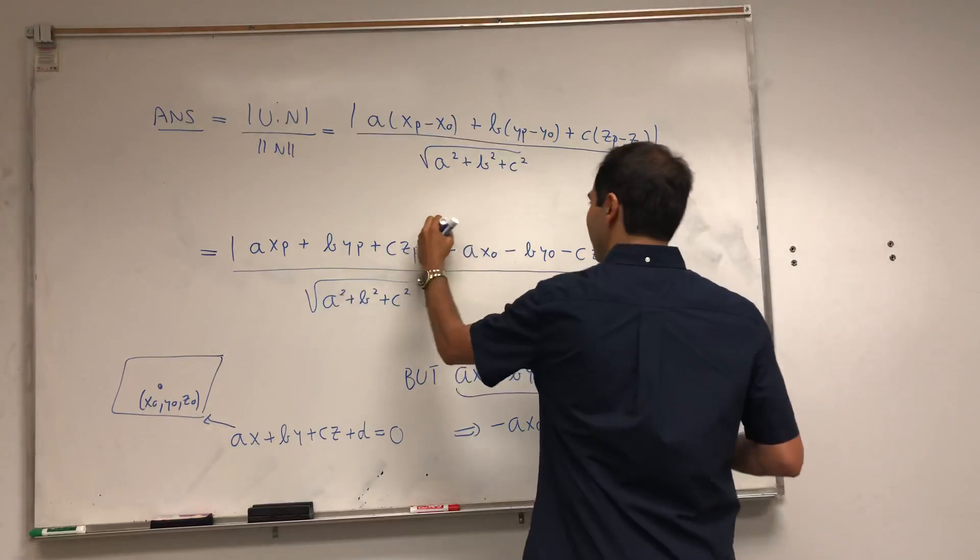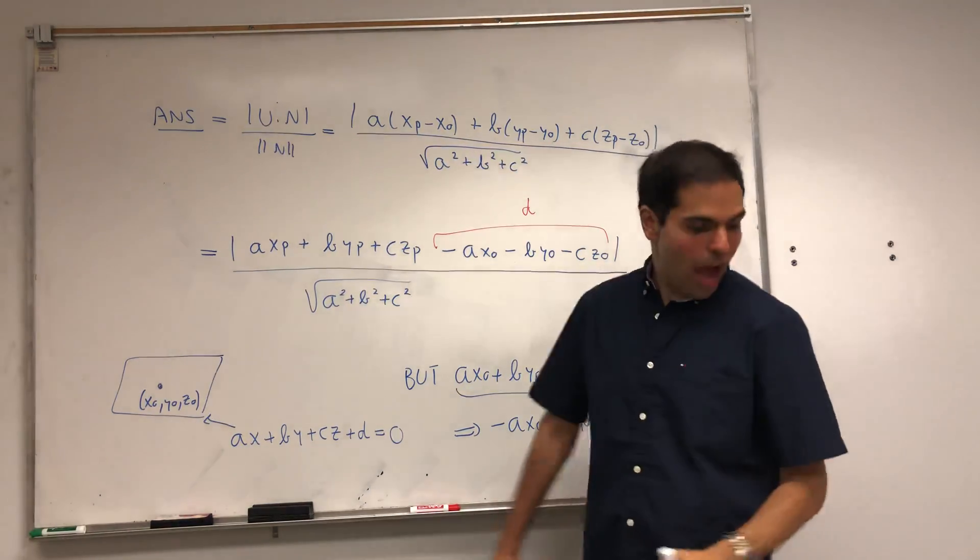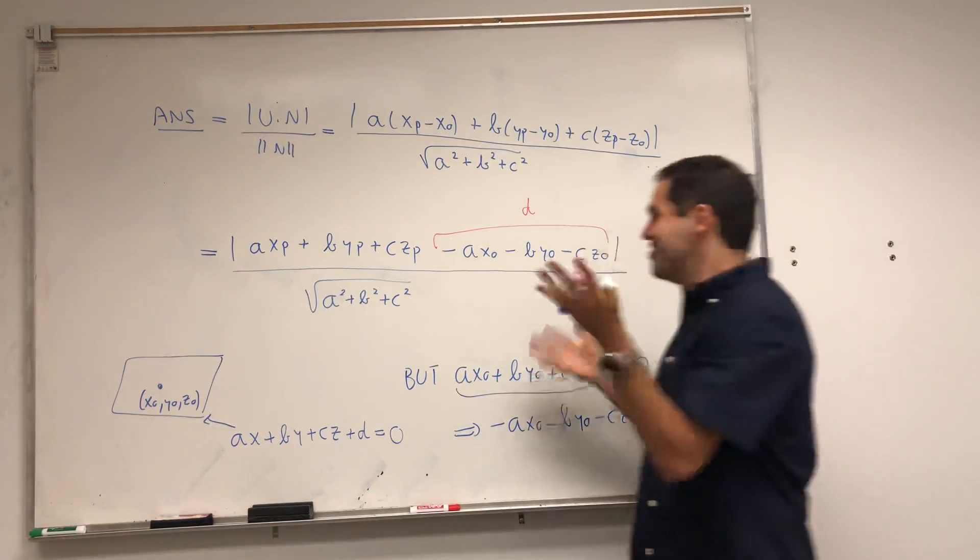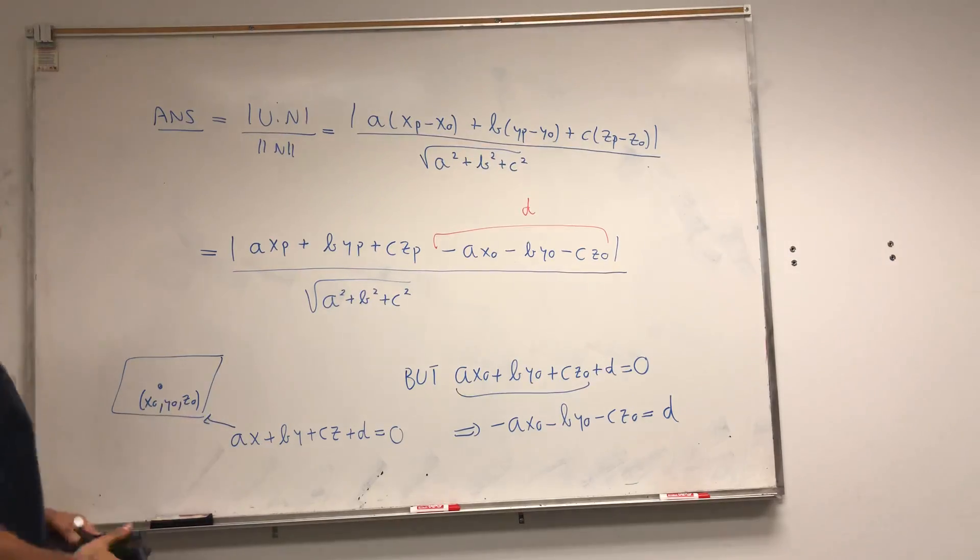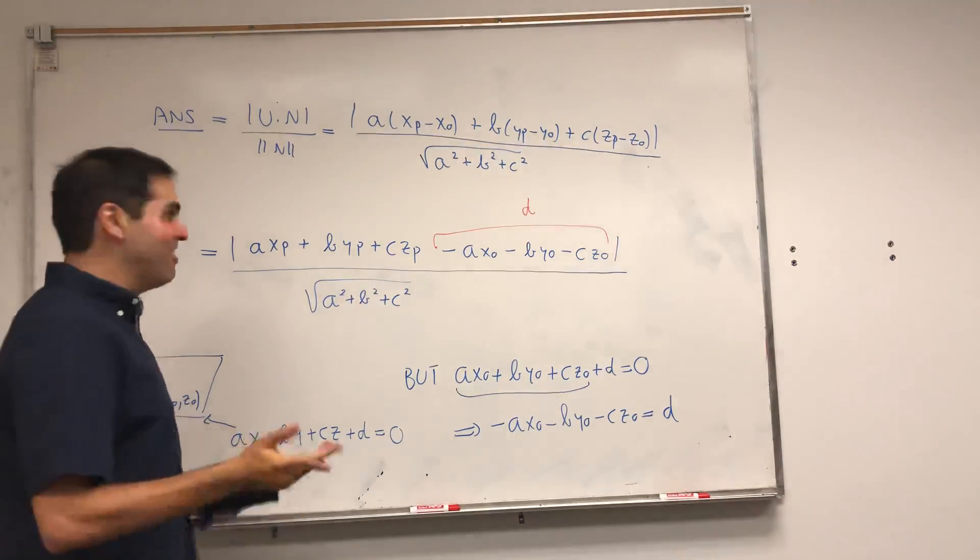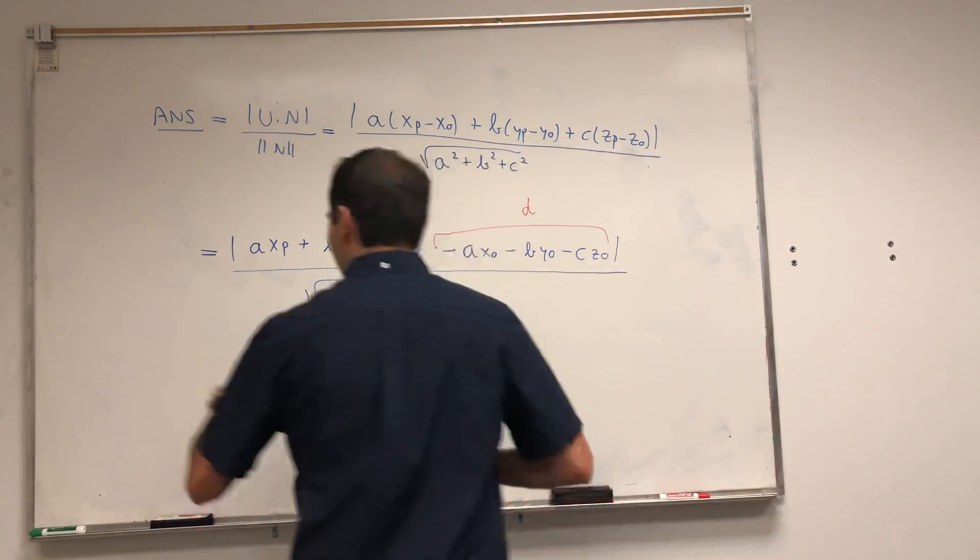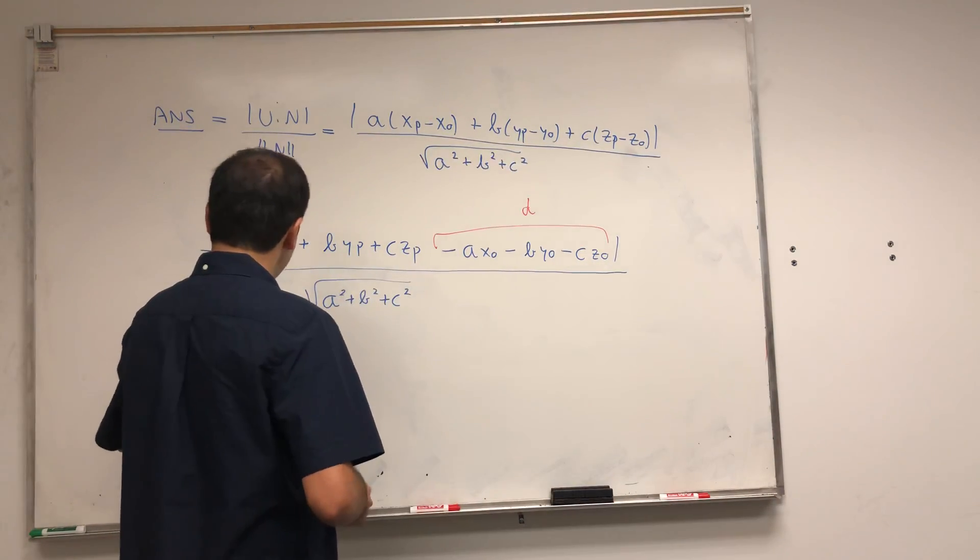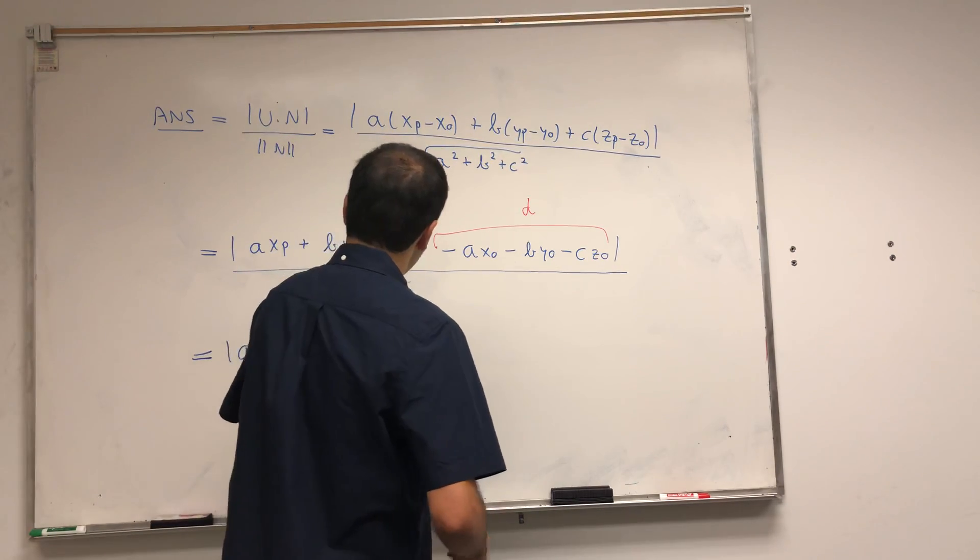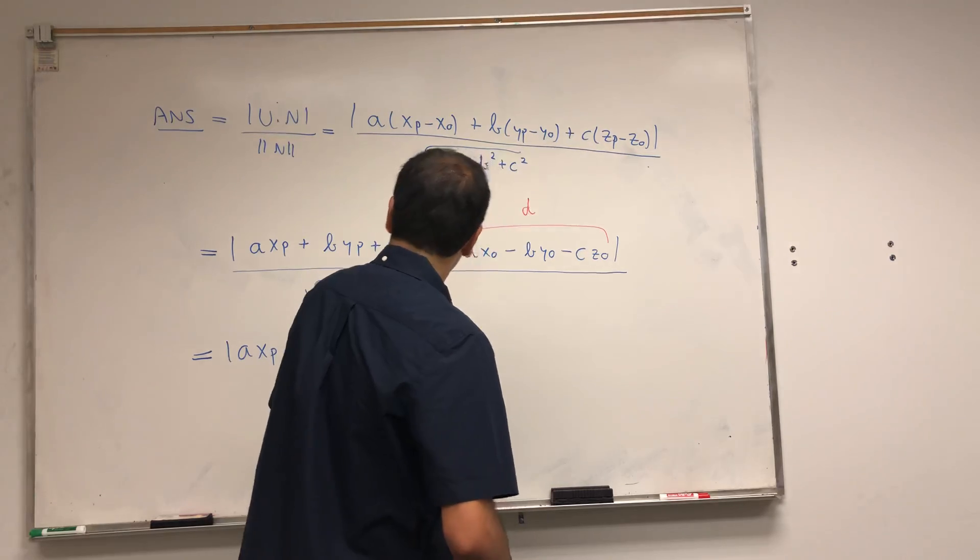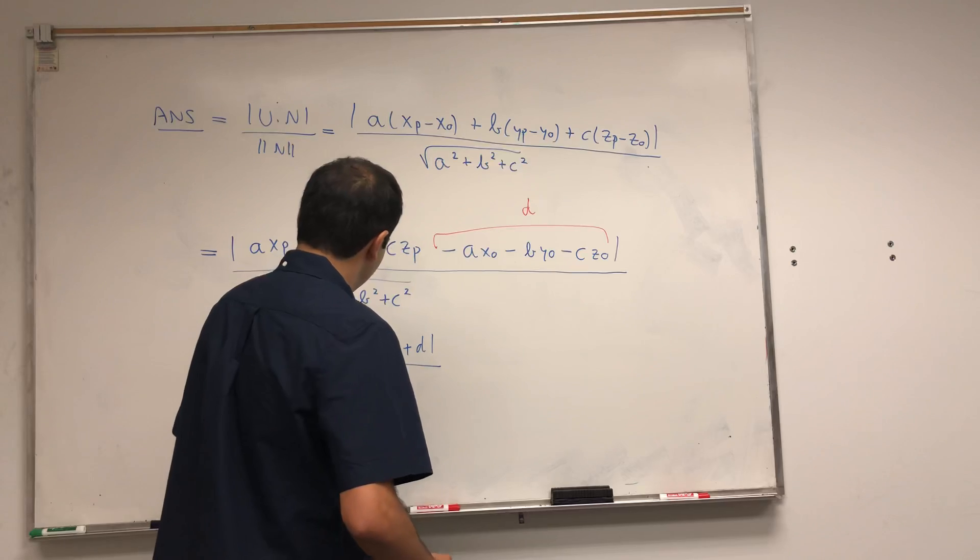So this whole mess here is just D. You're left with—I believe that's our formula, yes it is. I mean, of course it is. I really doubted myself, but yeah. So we get a formula that doesn't depend on x₀ at all: |Axp + Byp + Czp + D| / √(A² + B² + C²).